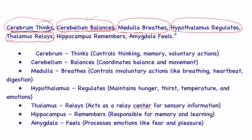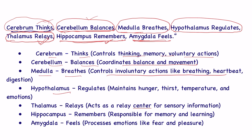Hippocampus remembers — so the memory part is controlled by hippocampus. Amygdala feels — all emotions are controlled by amygdala. To summarize: cerebrum thinks, controlling thinking, memory, and voluntary actions; cerebellum balances, coordinating balance and movement; medulla breathes, controlling involuntary actions; hypothalamus regulates hunger, thirst, and temperature; thalamus relays sensory information; hippocampus remembers, responsible for memory and learning; amygdala feels, processing all emotions.